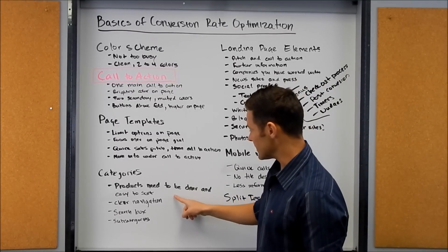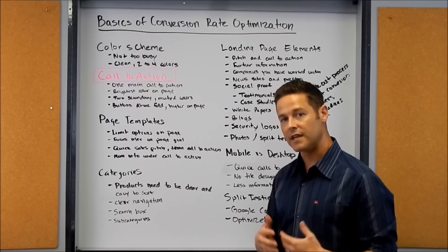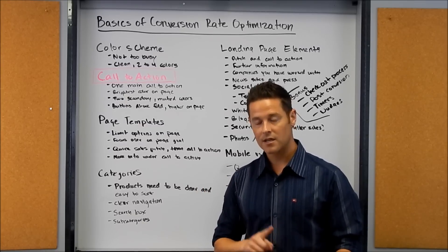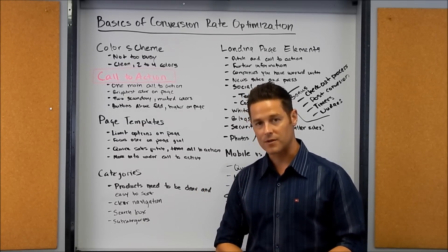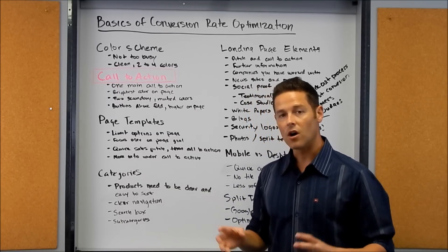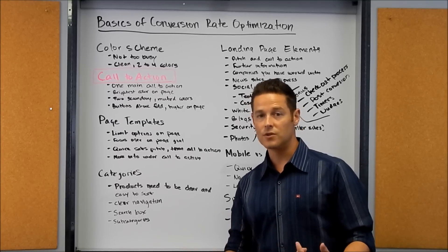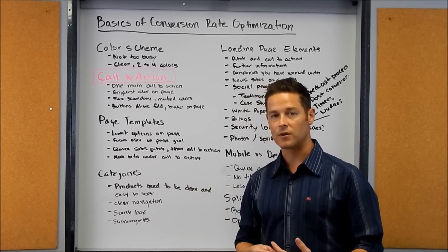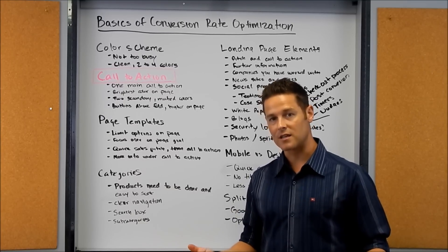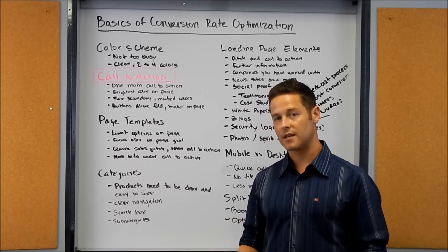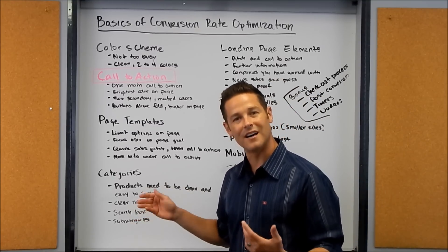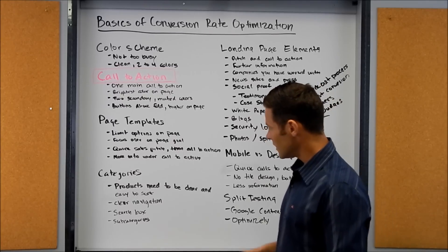When you get into category pages, now we're talking more about an e-commerce site. Keep in mind that every different website has a different goal — there are information sites, branding sites, e-commerce sites, lead generation sites, and news sites. News sites are focused on page views and time on site, lead generation sites are focused on specific leads, and e-commerce sites are focused on direct sales. So when we're talking about category pages on an e-commerce site, you want your products to be clear and easy to sort.